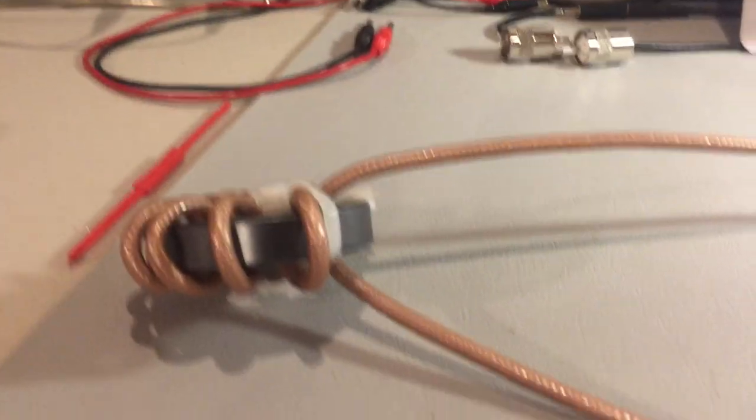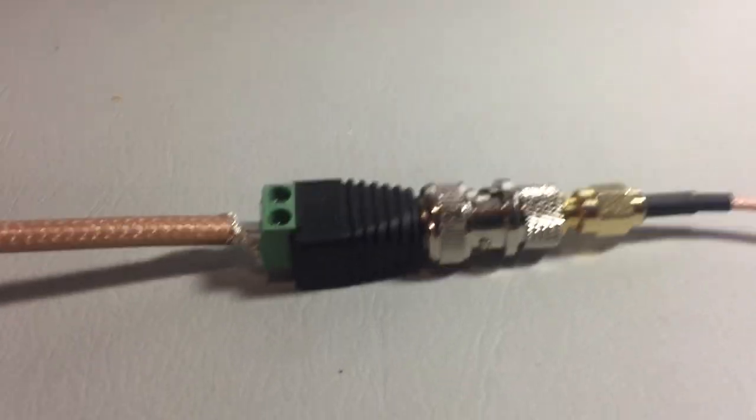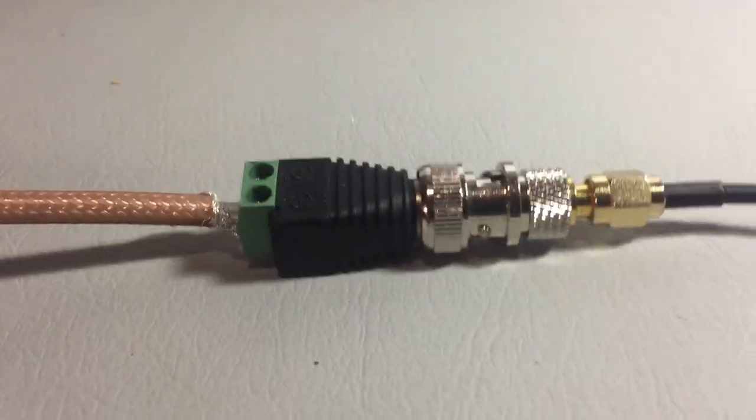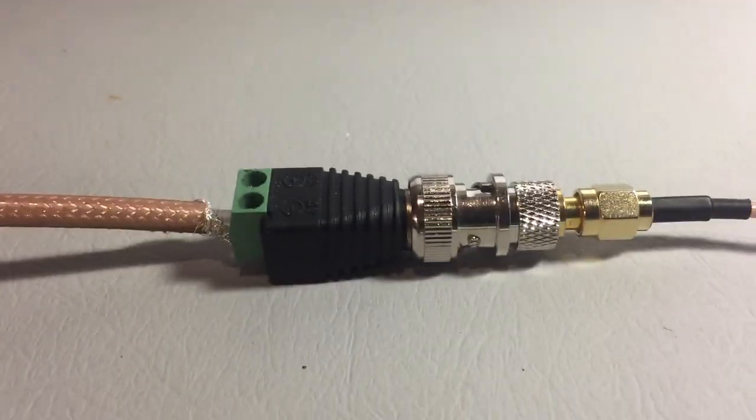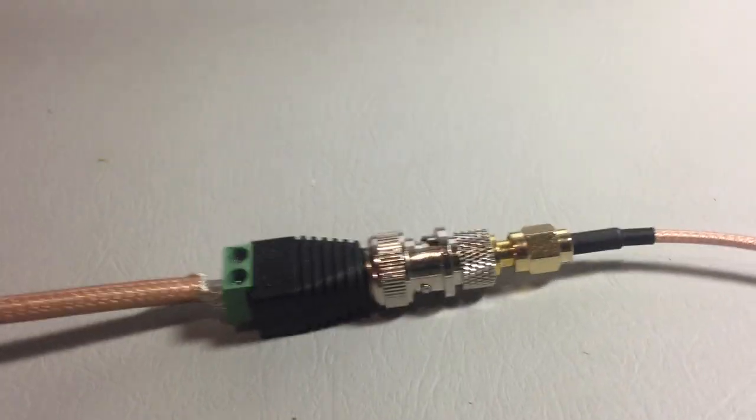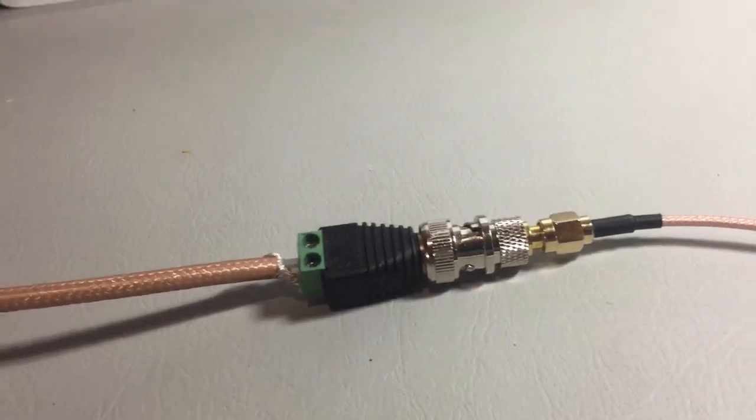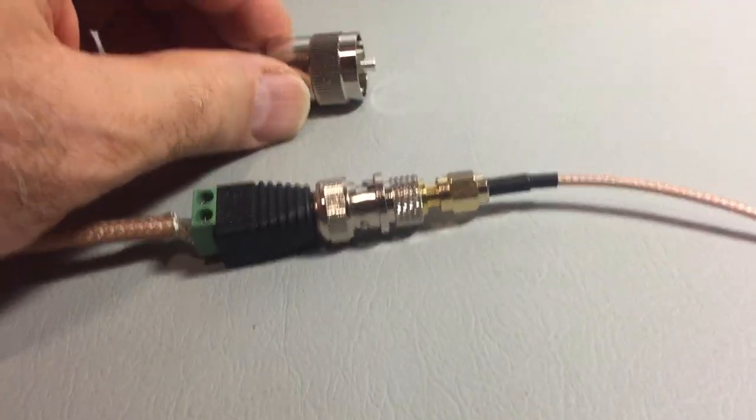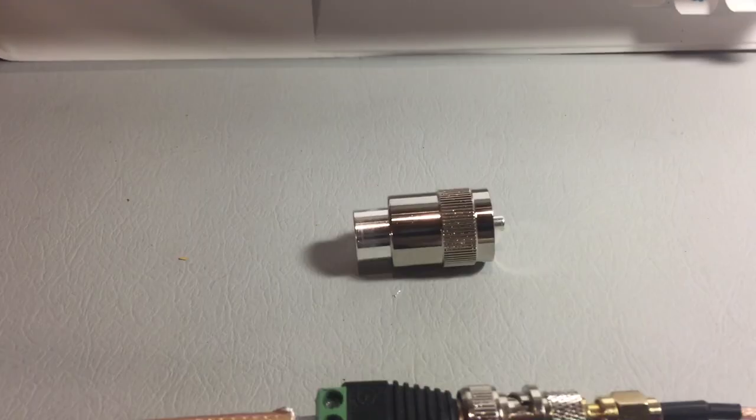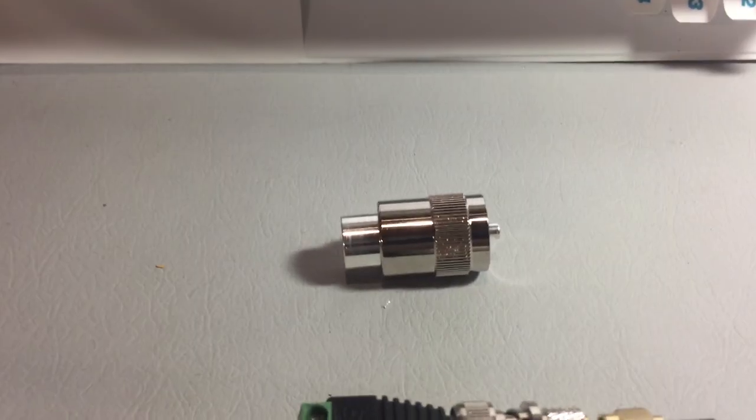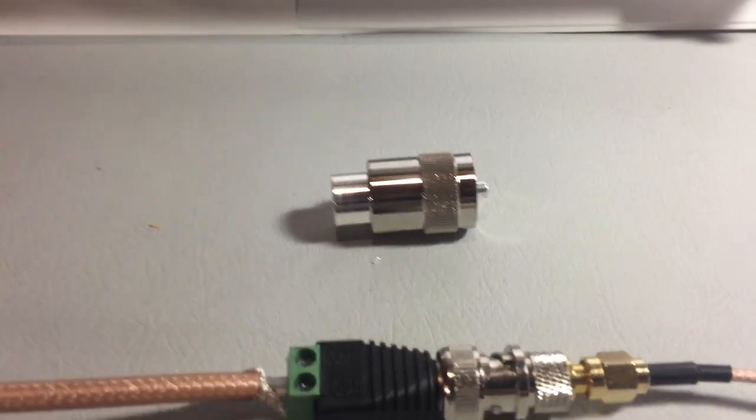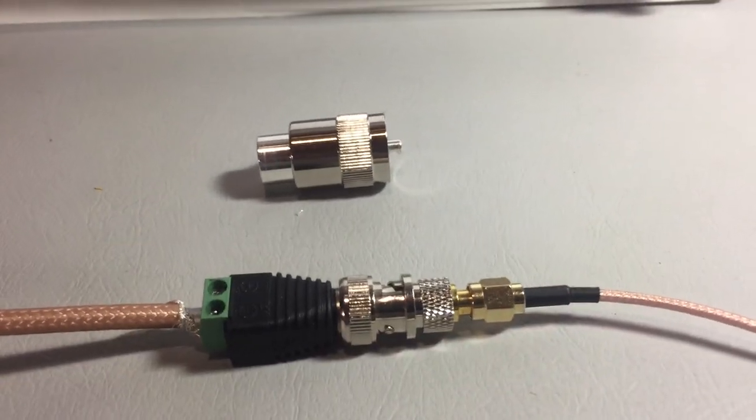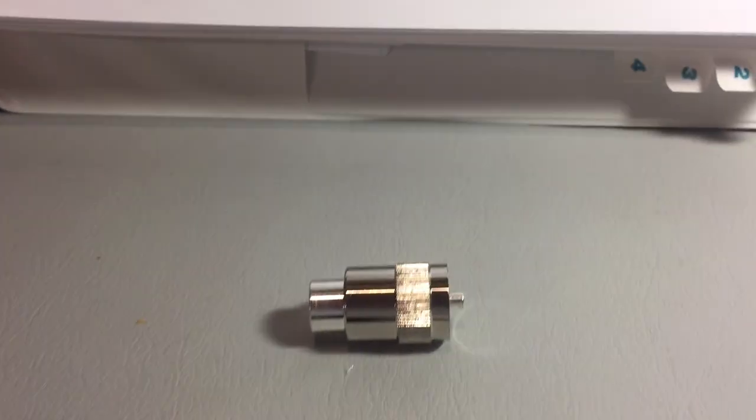This is my RF choke with BNC connectors so I can make various measurements easily. When I get testing done, I'll be putting on PL-239 connectors and putting it in line with my equipment. Let's go back and briefly revisit the diagram.